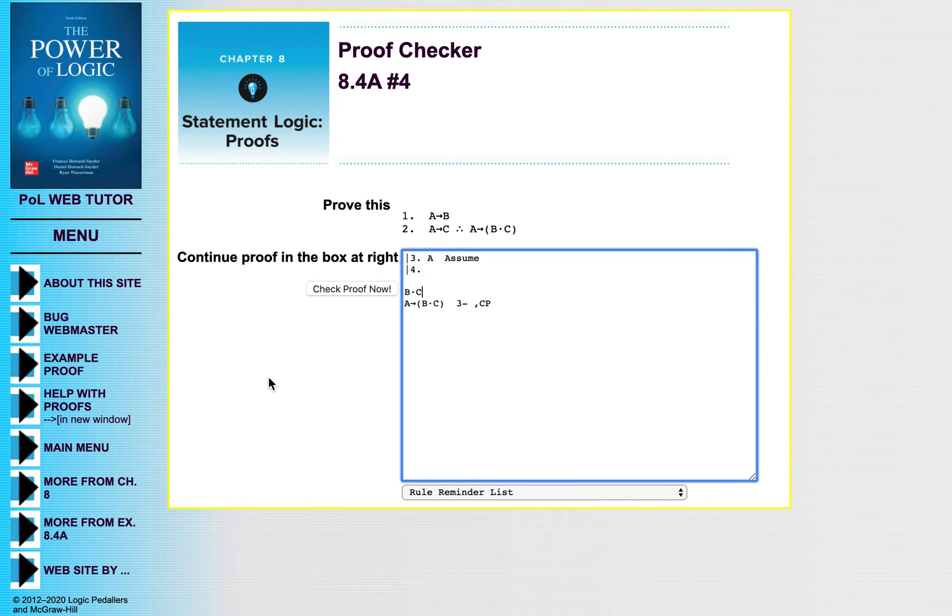Alright, so this should be familiar from the last class, but again, just going over the principles, assume the antecedent, the second to last line is gonna be the consequent in proofs like this. And then the last line is obviously gonna be the conclusion as it always is. Okay, so we want to get to B and C, and we're assuming A.